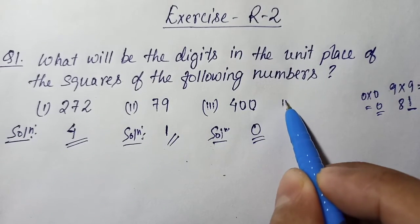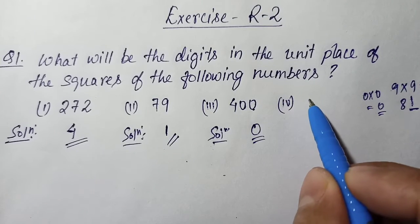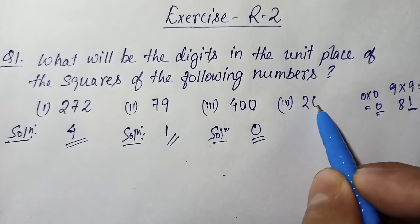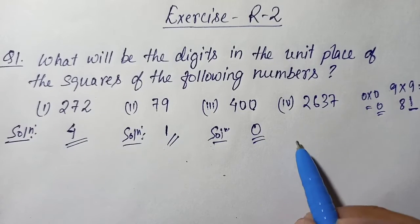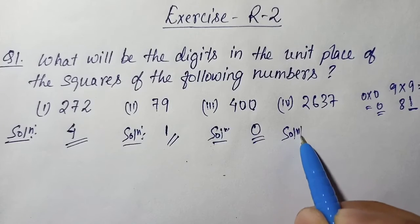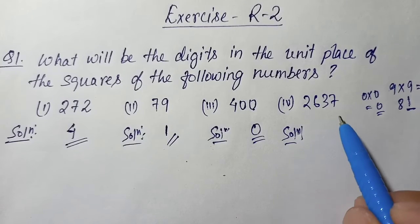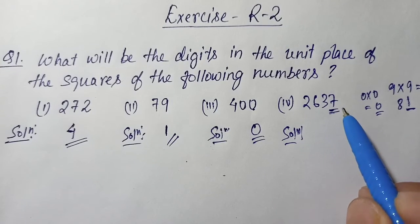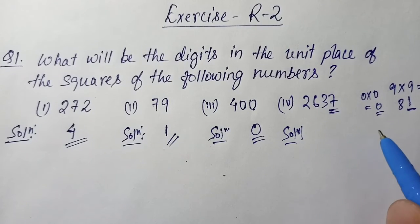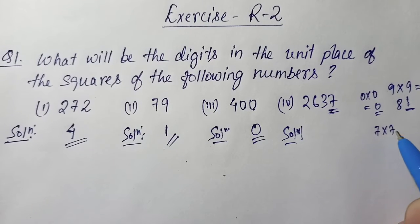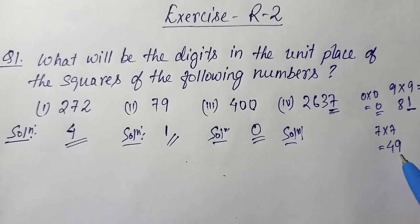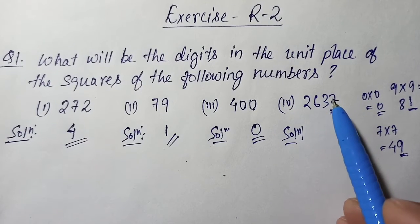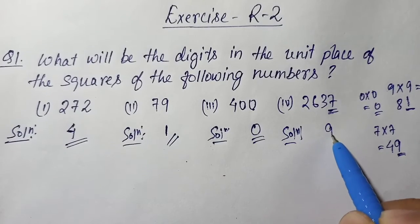Question number four: the number is 2637. Here the unit digit is 7. If you make a square, you get 7 into 7 = 49. In 49 the unit digit is 9, so if you make a square of this number, the unit digit will be 9.